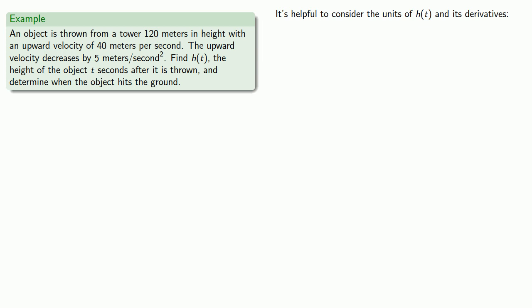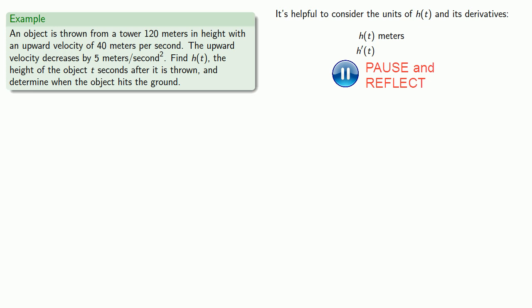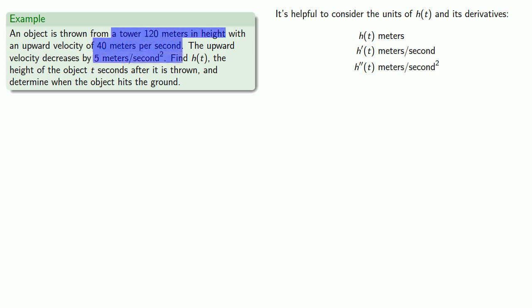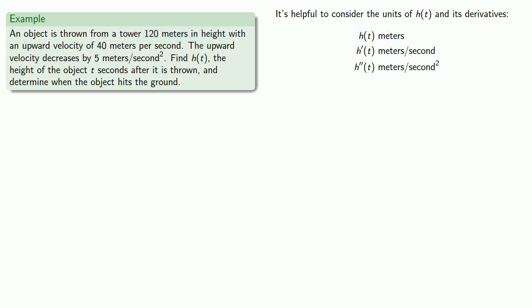h of t is the height of the object, and in this problem we're measuring height in meters, so h of t has units of meters. h prime of t will have units of meters per second. h double prime of t will have units of meters per second squared. Now the given information has units of meters, meters per second, or meters per second squared, and that tells us we have information about h of t, h prime of t, and h double prime of t. In particular, the tower is 120 meters in height — that's an h of t value, because the units are the same as the units of h of t.